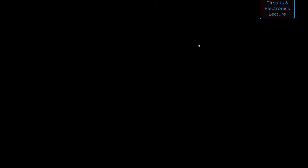Student question: on the last slide with the time domain and phasor domain, for the exponential and polar forms, are those thetas the same as in the sinusoid form? Yes — the theta on the left is the same as the theta on the right, and so is the A. To convert a polar form phasor: if the amplitude is 5, you write 5, and if the angle is 30 degrees, you write 30 degrees after the angle sign. It really is that easy to convert a time domain sinusoid to phasor domain representations.